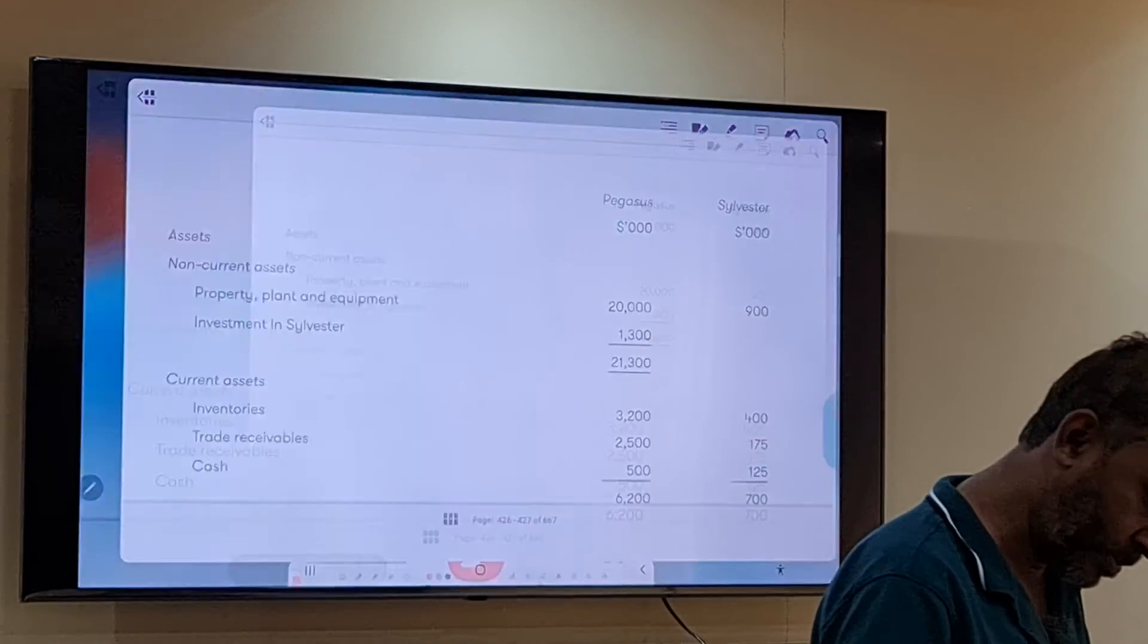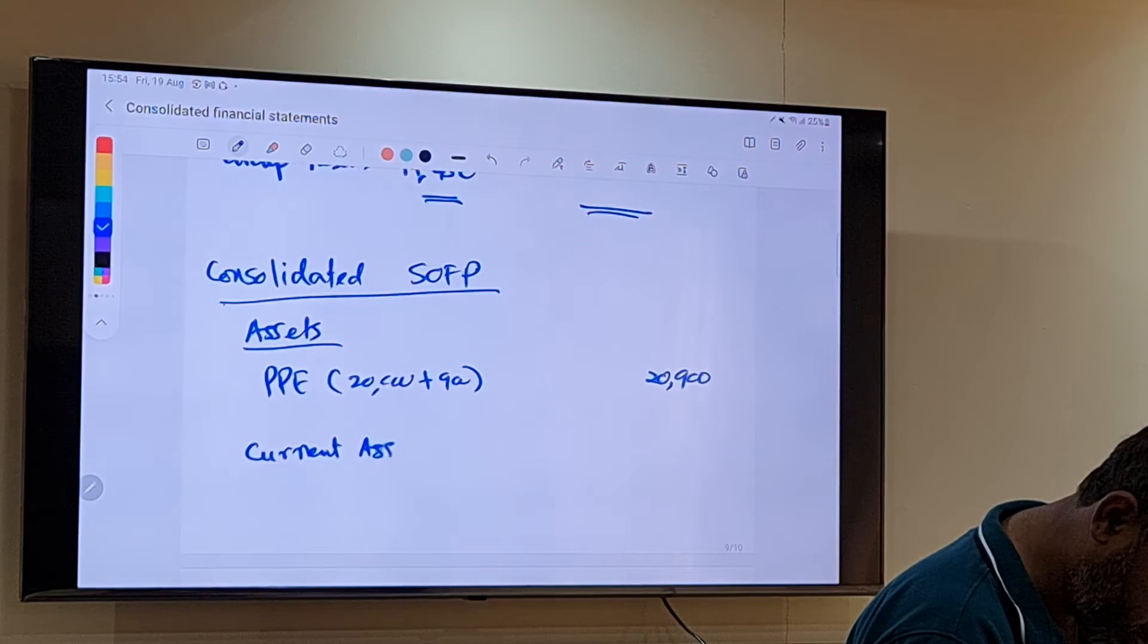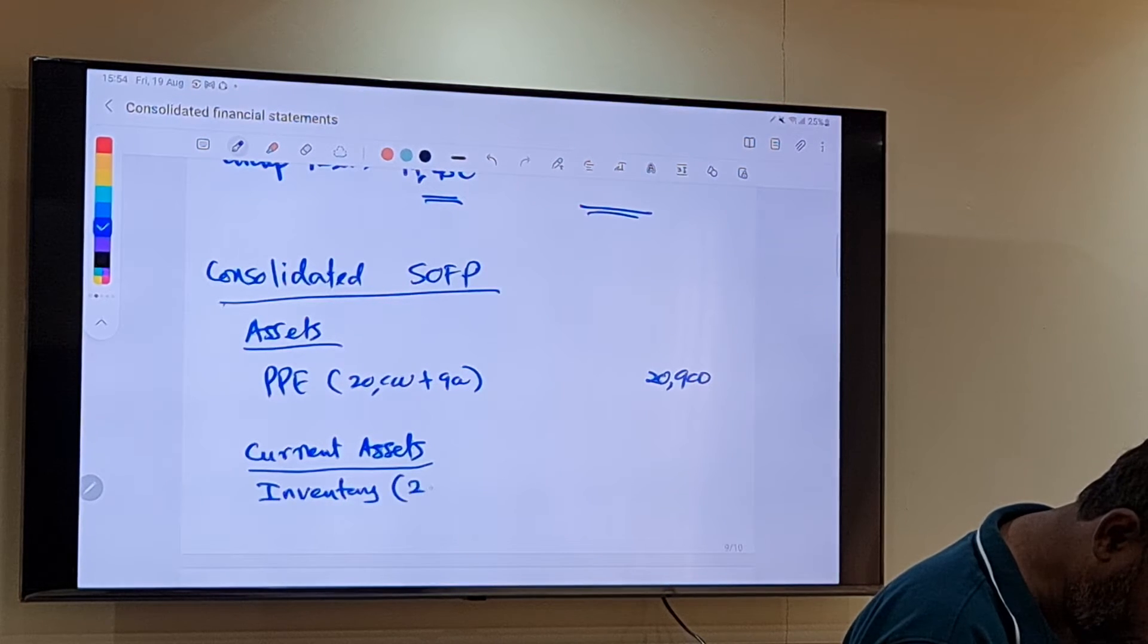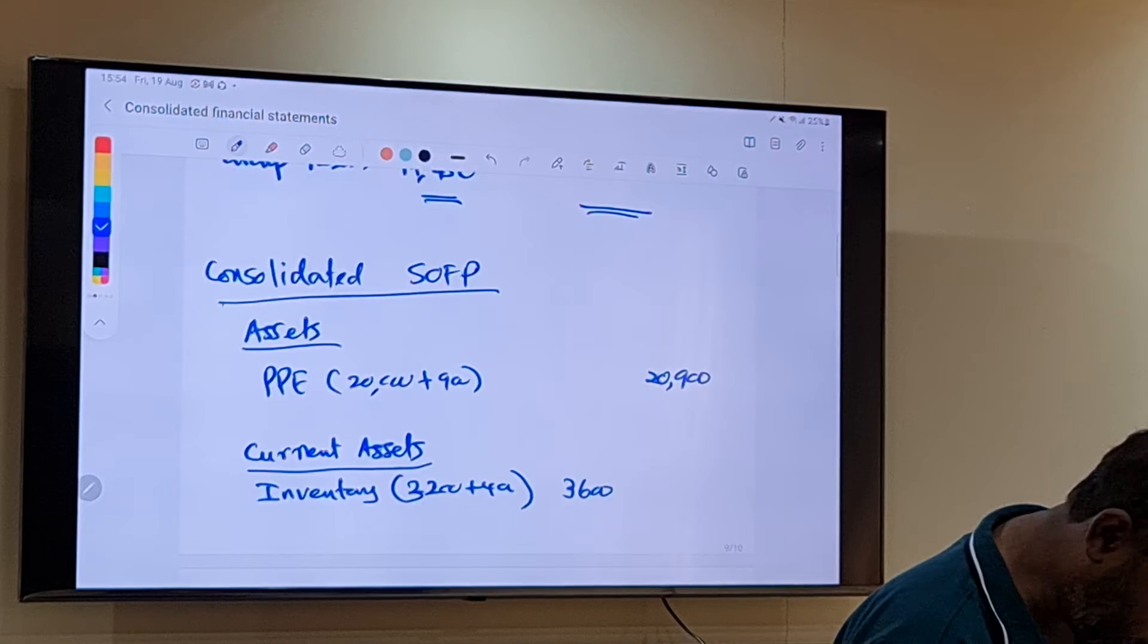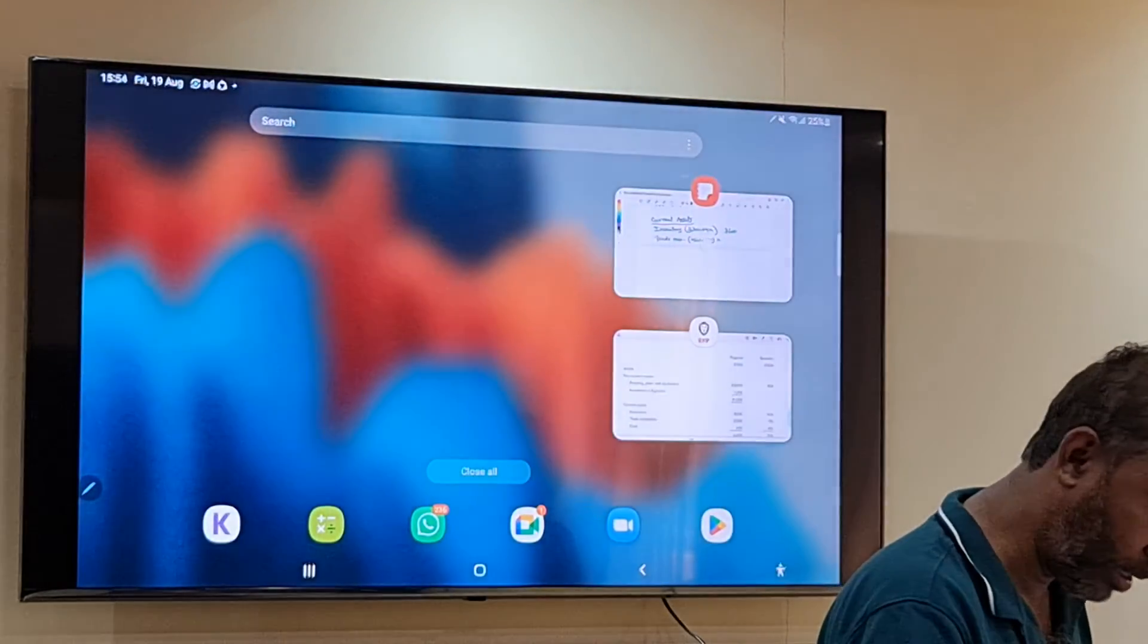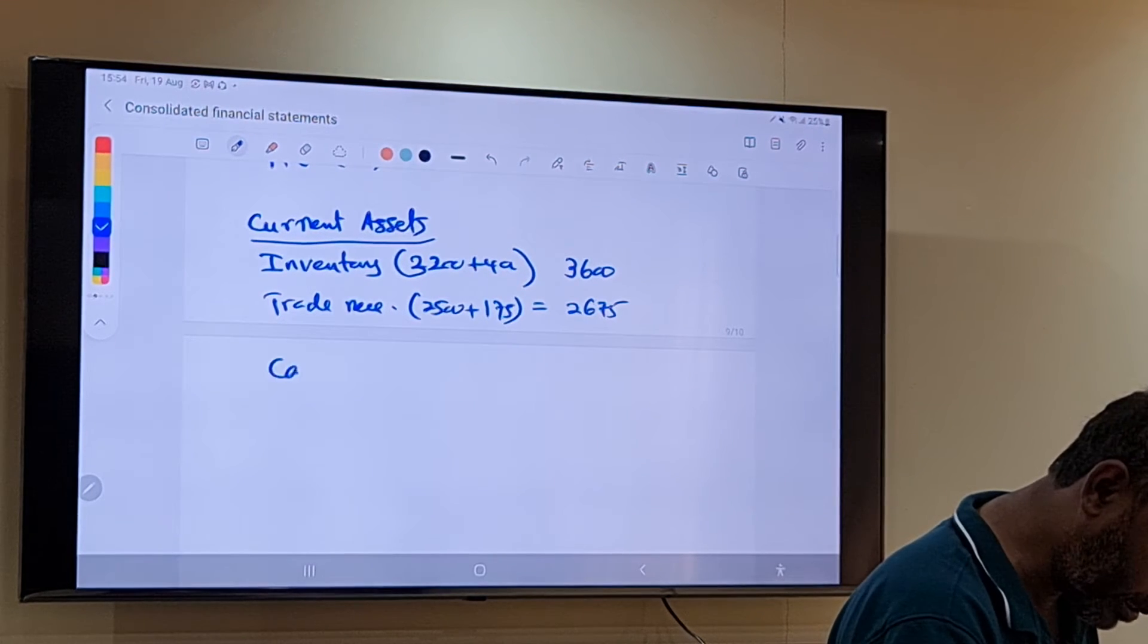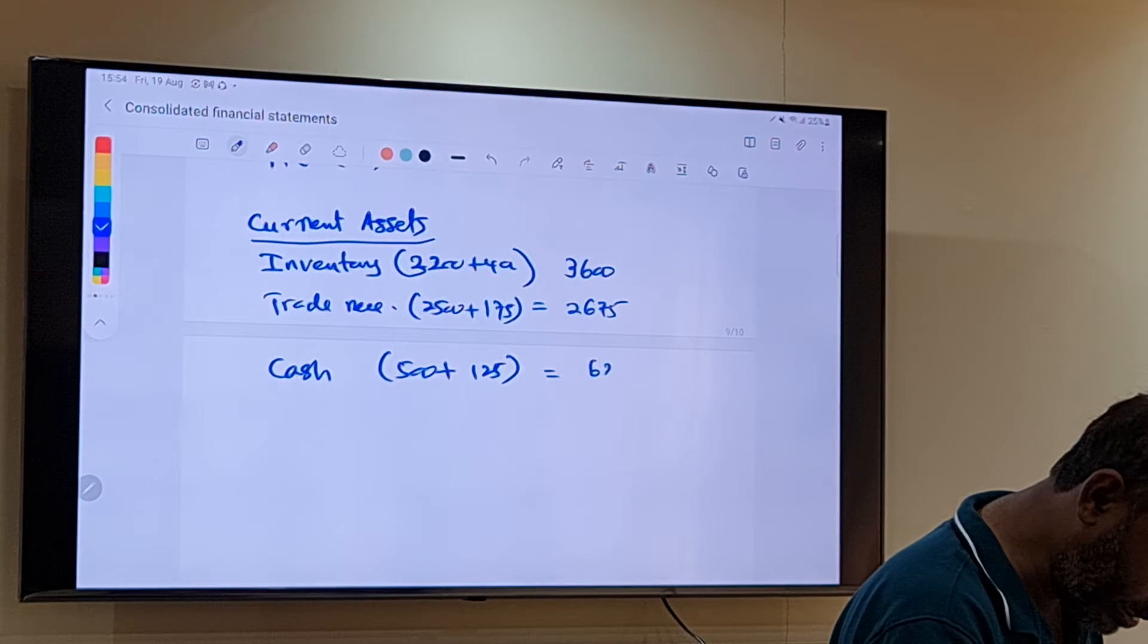Now we come to current assets. First item inventory: 3,200 plus 400, that means 3,600. Next item trade receivables: 2,500 plus 175, that's 2,675. Cash, how much? 500 plus 25, that's 525. So current assets total is 6,025. Anything else?